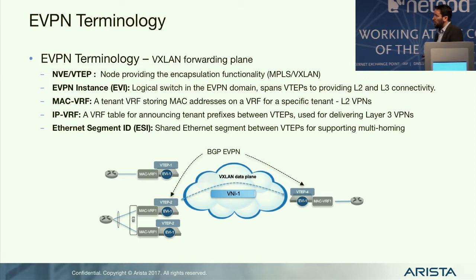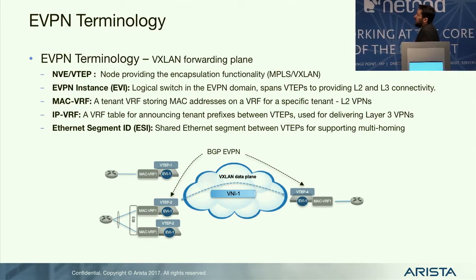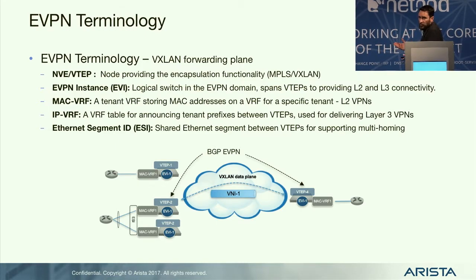Beyond the RFC there are drafts — vendors like Arista have implemented them. One draft takes that control plane and applies it to NVO (Network Virtualization Overlays), covering VXLAN, NVGRE, and MPLS-over-GRE encapsulation. There's also a Metro-focused draft using PBB. What I'll discuss is EVPN in relation to VXLAN, but the control plane and route types are very similar across different forwarding planes. In NVO terminology, an NVE is the same concept as a VTAP.